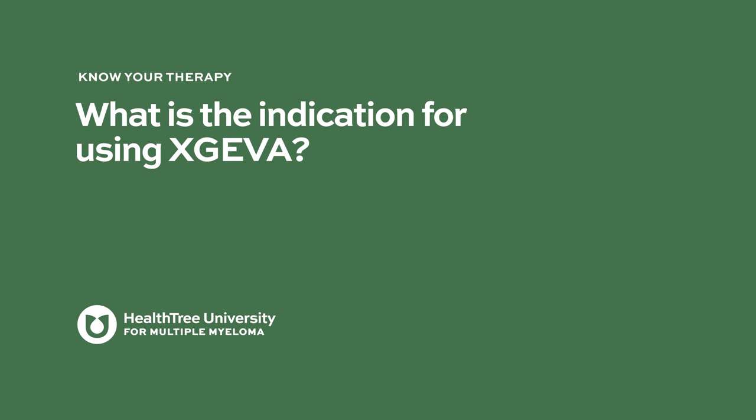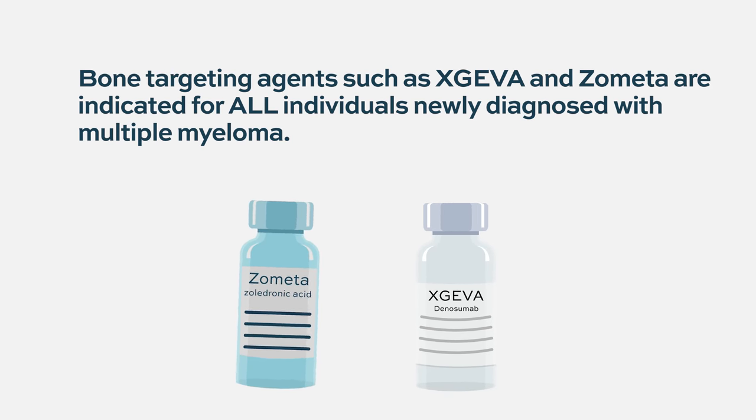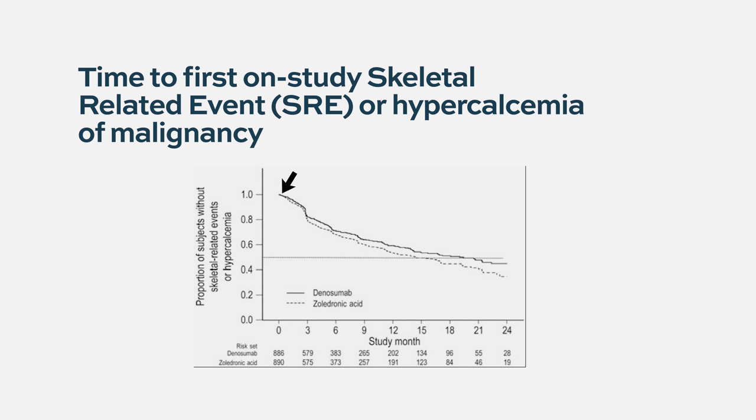What is the indication for using Xgeva? It used to be that patients who didn't have lesions in the bones or bone fractures may not be given bone targeting agents in the past. But then there have been studies specifically in multiple myeloma patients where all patients received bone targeting agents. The most standard thing to do now is to give bone targeting agents such as Denosumab to all newly diagnosed patients, because a large study showed that in all patients, no matter whether they had lytic lesions or not, it decreased what we call a skeletal-related event — it decreased the risk of fractures in myeloma. So it's indicated for all patients.